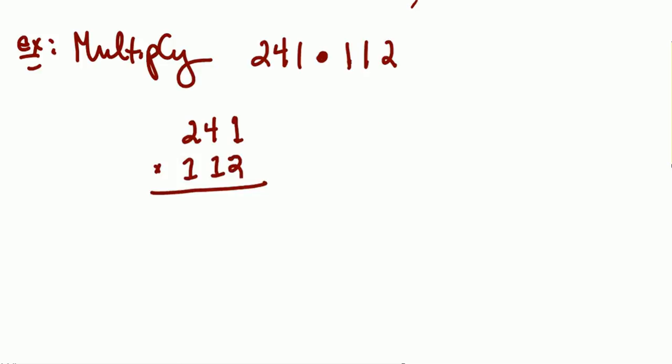Again, now we'll begin. The two times one is two. Two times four is eight. Two times two is four. And now we're going to indent, right? Moving down to the next one. So one times one is one. One times four is four. One times two is two.